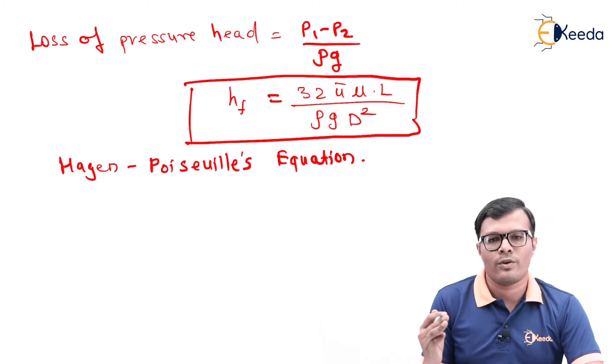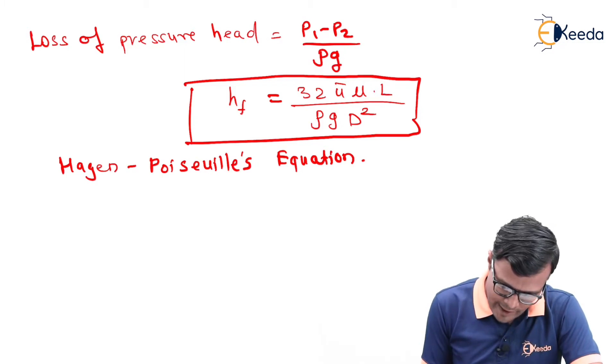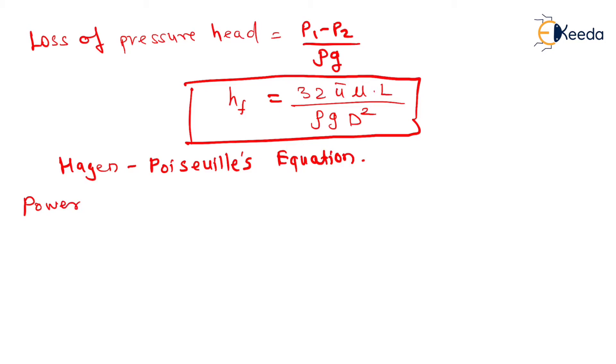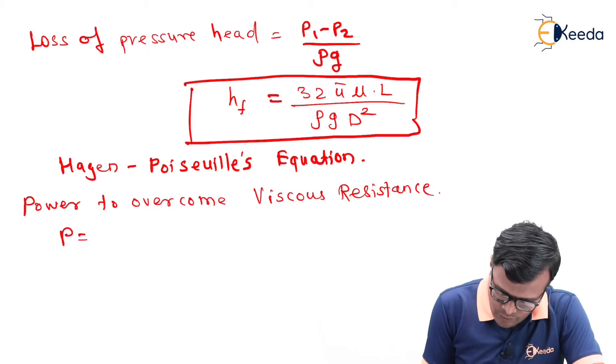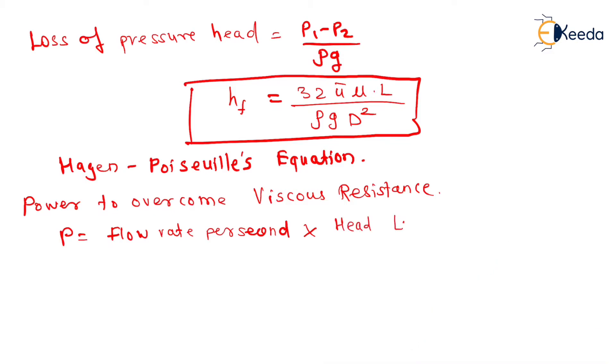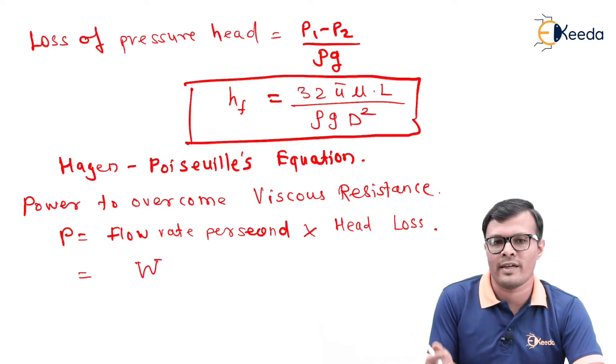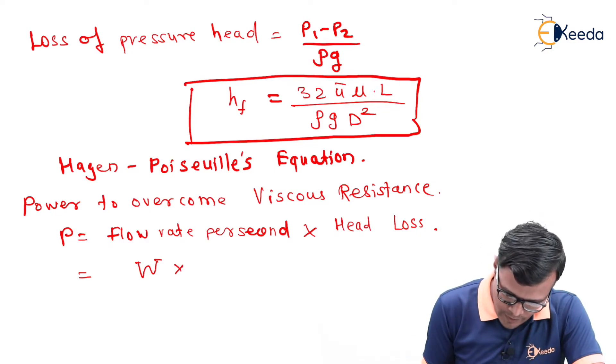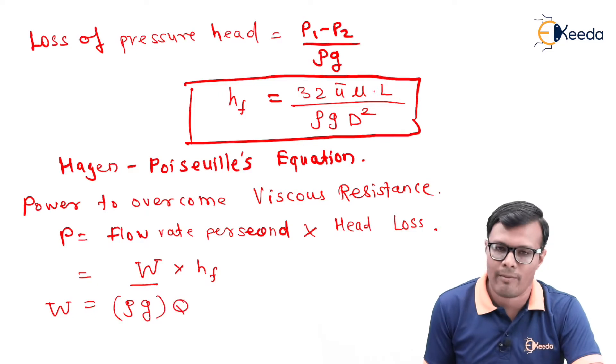Now if I want to do another calculations by considering head loss, then I can continue with this relation. First of all, we will calculate power to overcome viscous resistance. That can be calculated as P is equal to flow rate per second multiplied by head loss. Flow rate per second will be denoted by letter capital W, weight of water which is flowing in one second, that is W into head loss HF that we have already calculated. First we will find how to calculate this capital W: it is rho g into Q, or gamma Q.